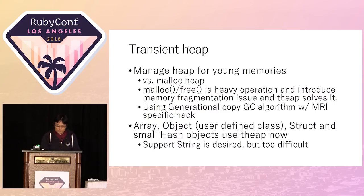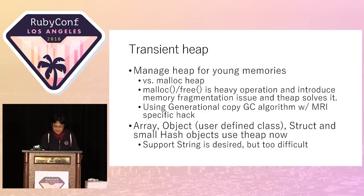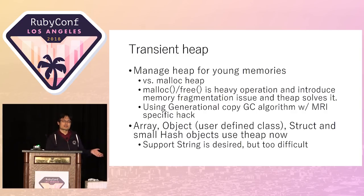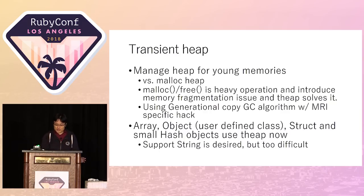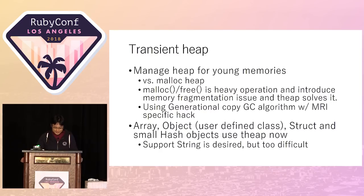With transient heap, we can speed up allocation for young memories — in this case, young memories means short-living memories. If you allocate some memory and free it immediately, it will be a young memory. We currently support transient heap for array, object, struct, and small-element hash objects.